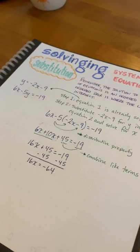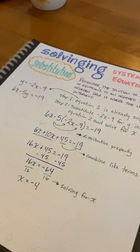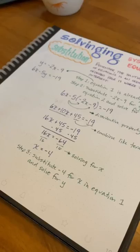Next, we're going to combine like terms. We're going to solve for x by dividing both sides by 16, which will give us an x value of negative 4.